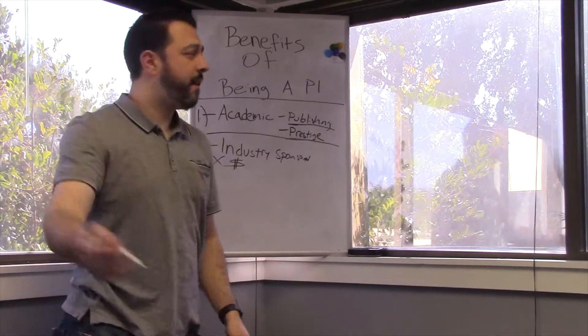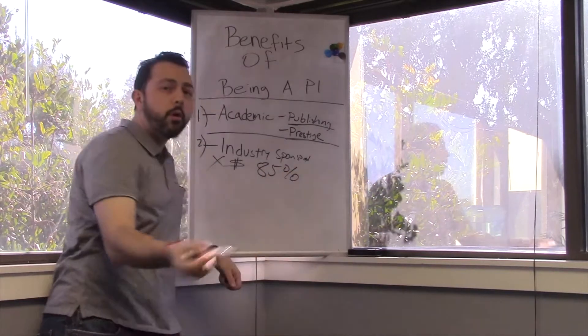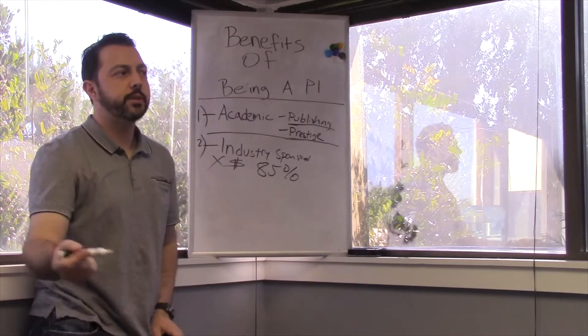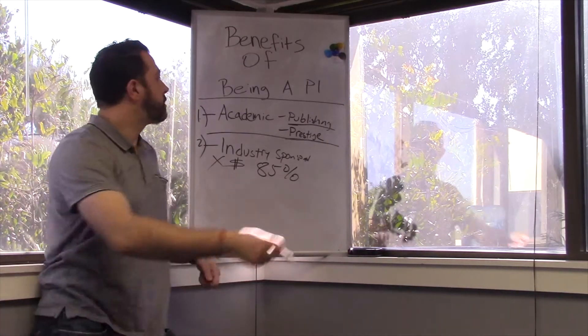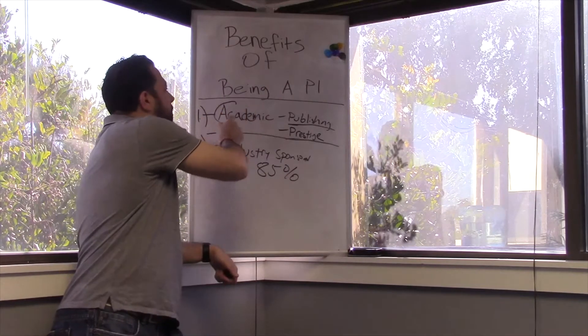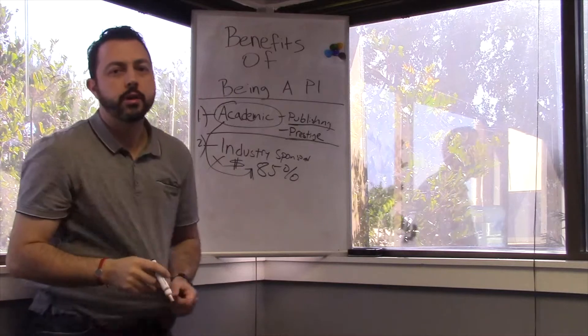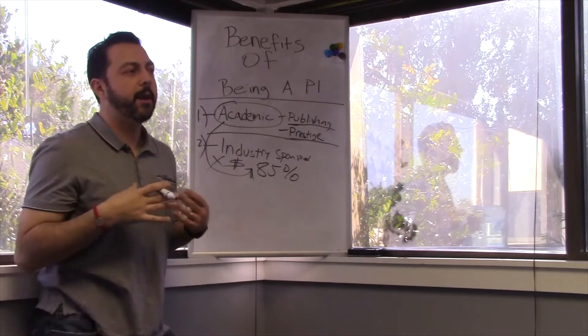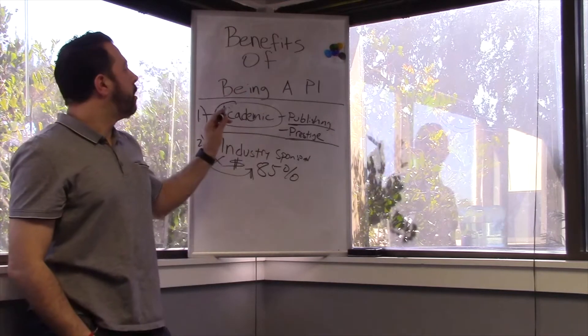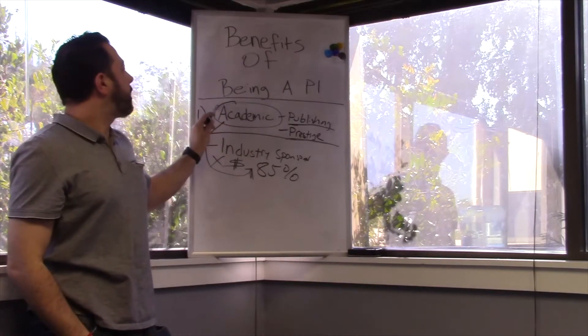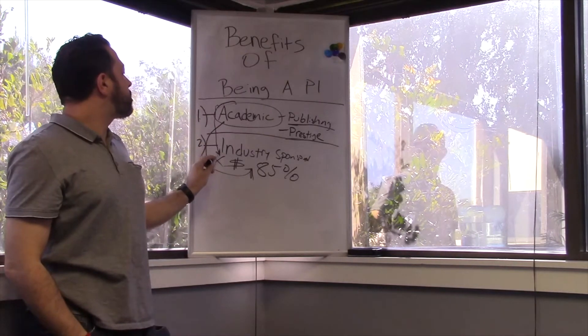But 85% of research, and now more, because Trump just slashed 20% of the National Institute of Health Research budget. So it's going to take away even more research from academic into the industry-sponsored side. So you're going to see, I'm predicting, again, I'm not a prognosticator, but it's just supply and demand. I'm predicting you're going to start seeing a lot of academic PIs switching over to the industry-sponsored PIs.